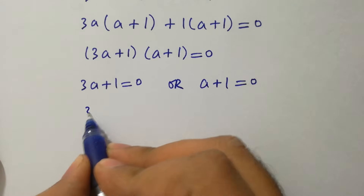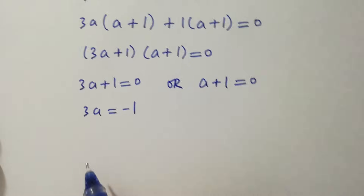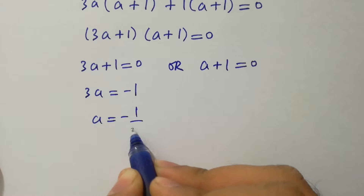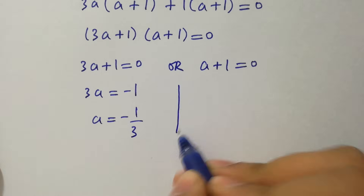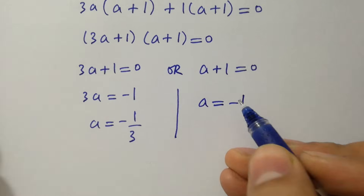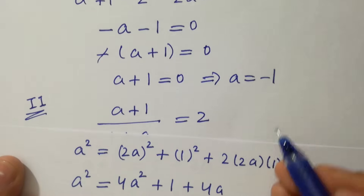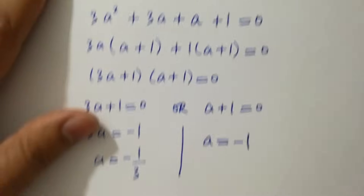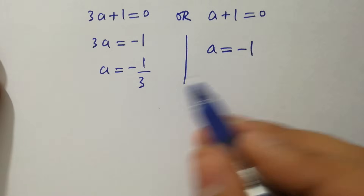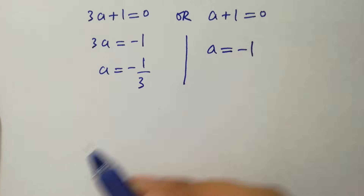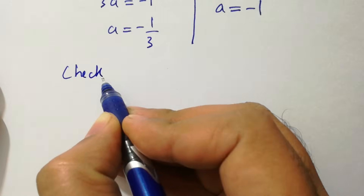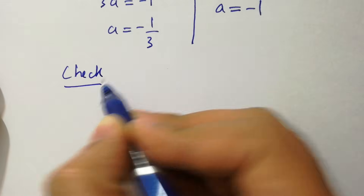Either 3a + 1 = 0, giving a = -1/3, or a + 1 = 0, giving a = -1. So by the first method we get a = -1, and by the second method we get a = -1 and a = -1/3.